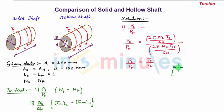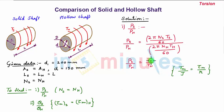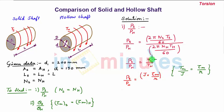We know the torsional formula is TM/J = τM/R, so TM = J·τM/R. Substituting the torque values for the solid and hollow shaft, we write PS/PH as (J·τM / r) for the solid shaft — where r is the outer radius of the solid shaft — divided by (J·τM / R) for the hollow shaft, where R is the outer radius of the hollow shaft.